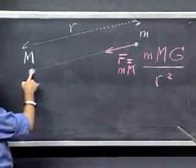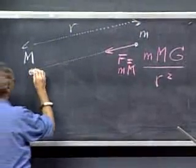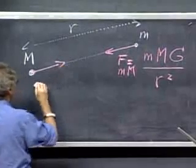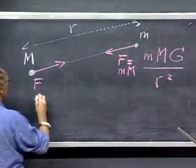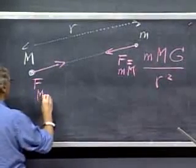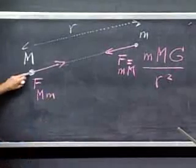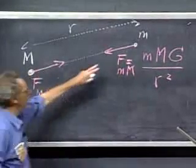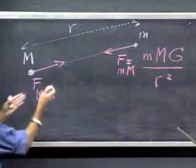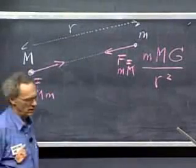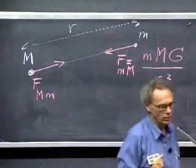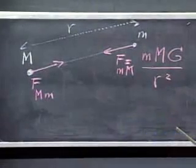This object, since Newton's third law holds, action equals minus reaction, this force, which I will indicate as capital M little m, is the force that this one experiences due to the presence of this one, is exactly the same in magnitude but opposite in direction. And that is the universal law of gravity.